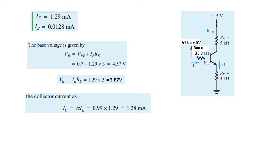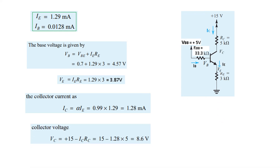VE is also confirmed at 3.87V. IC is approximately equal to IE, so IC is 1.28 milliamperes. VC is calculated as 15 minus the voltage drop IC·RC, giving VC equal to 8.6 volts. All parameters VB, VC, VE, IB, IC, and IE have now been calculated.